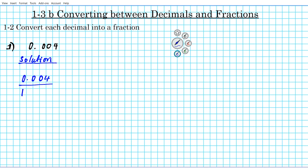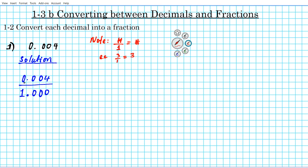One is in the ones place, so we'll put it to the left of the decimal. We have three digits to the right, so we write 1.000. A key point: any number divided by one is just that number — one is the identity under division. So 0.004 divided by 1.000 is still exactly the same as what we started with.